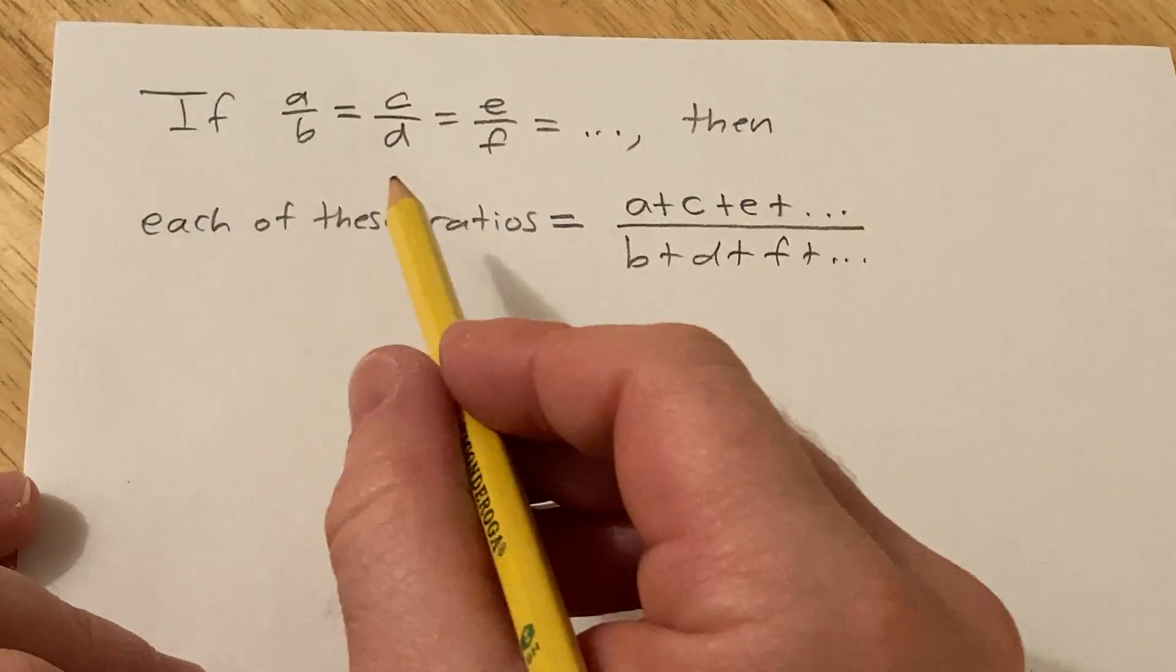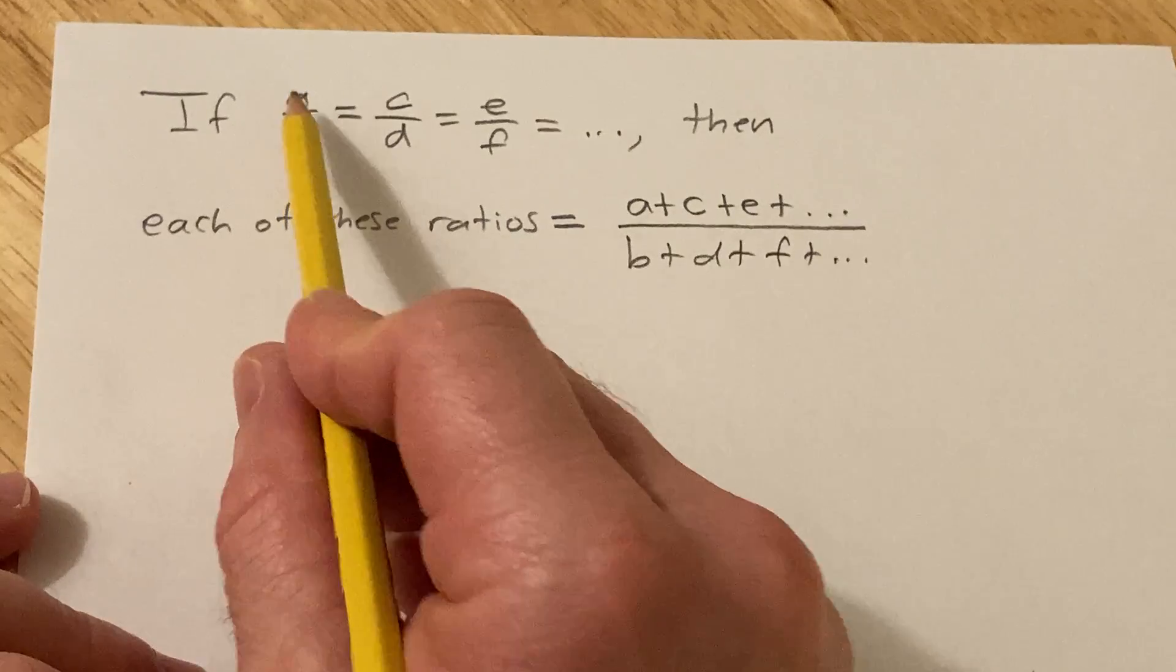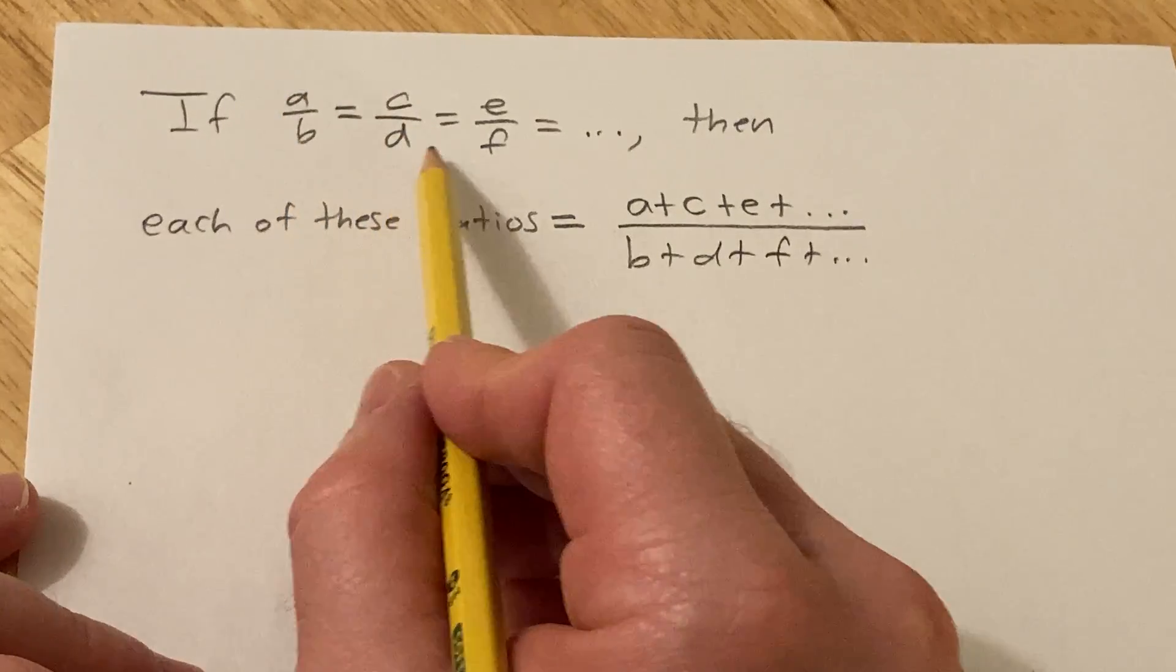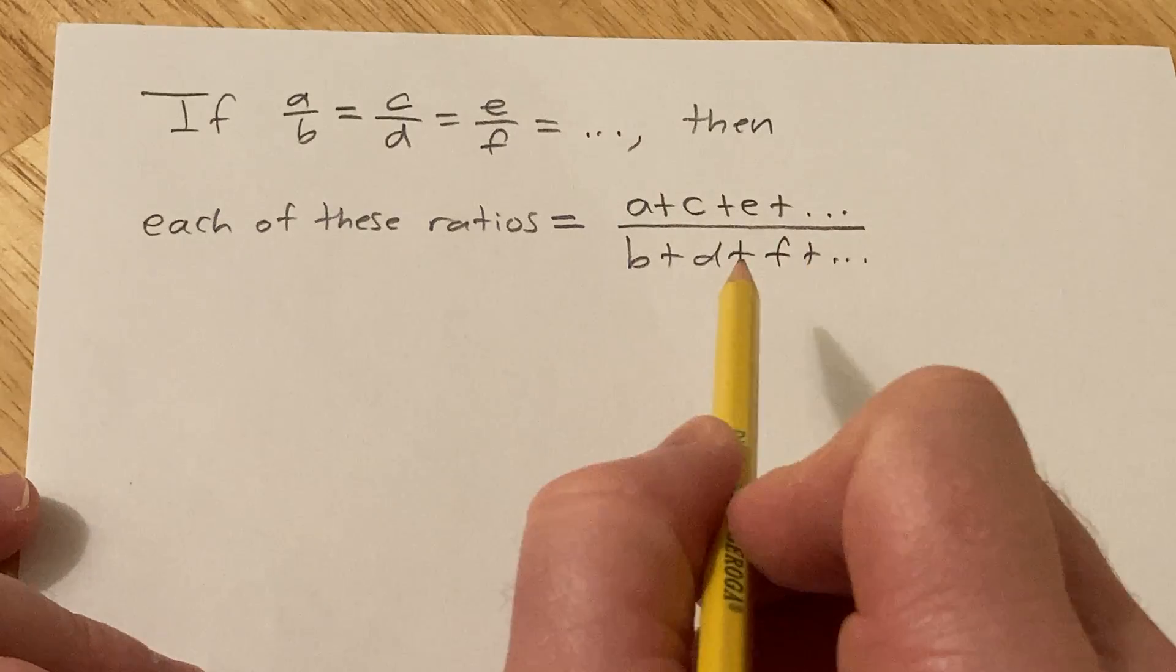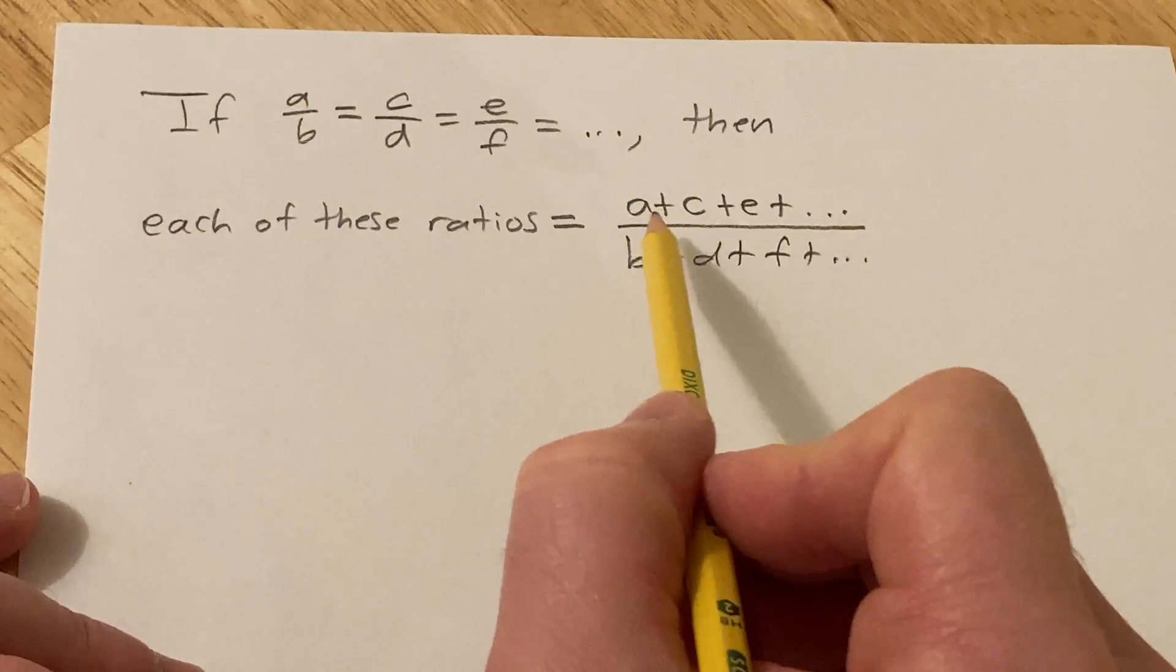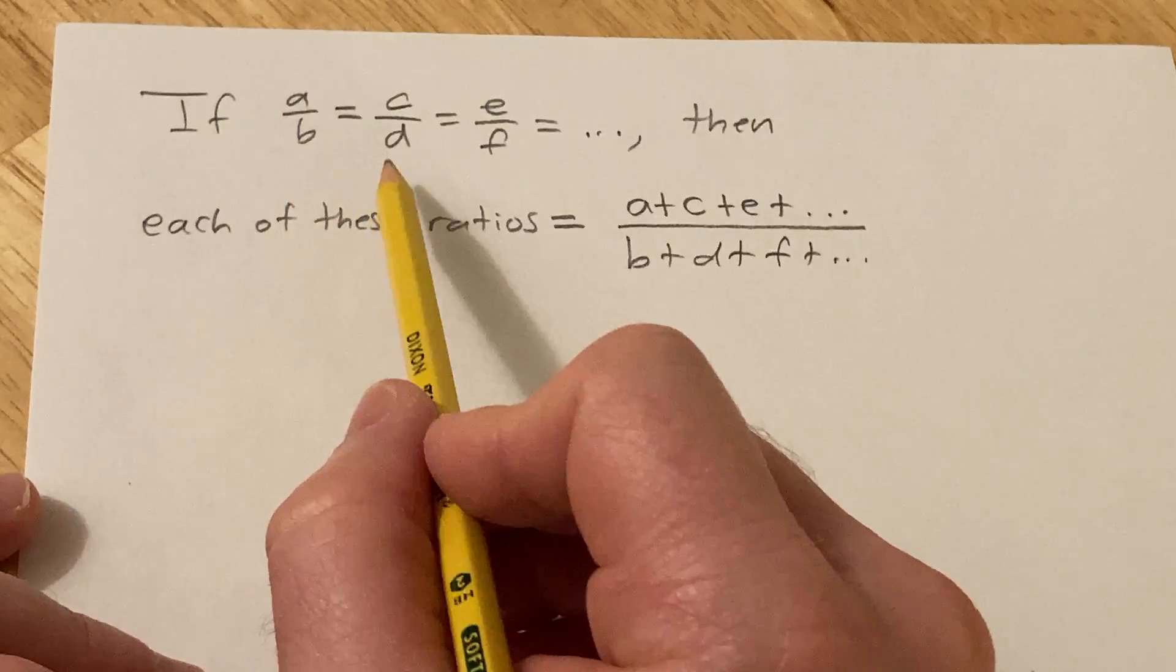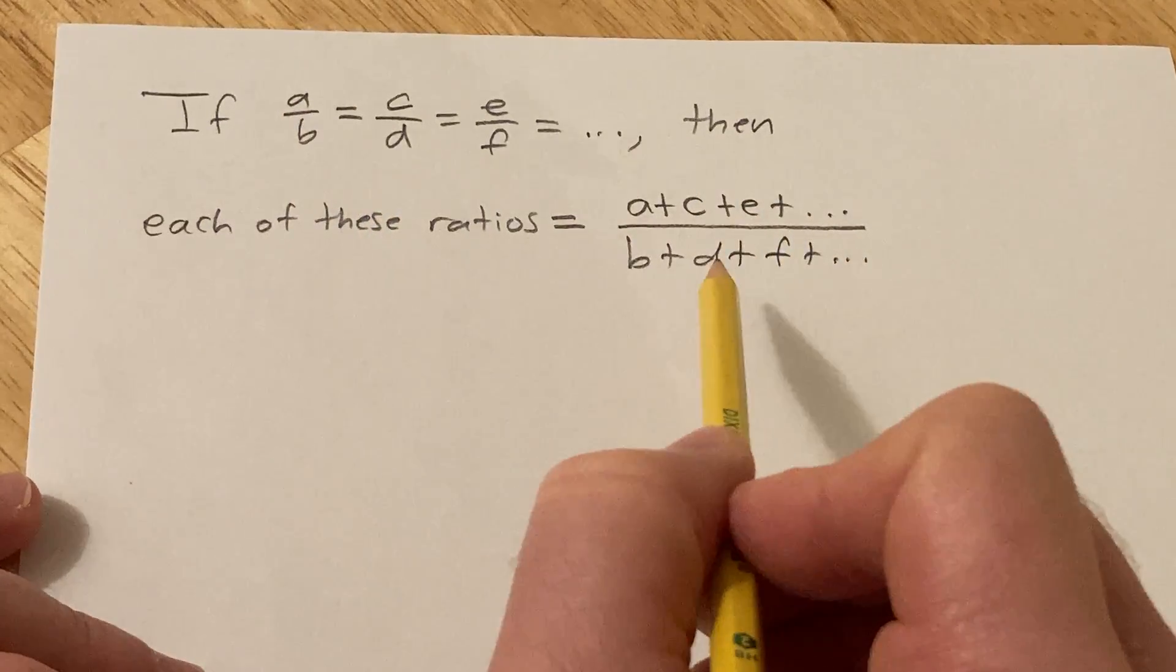Hi, in this video we're going to do a problem. We're told that if all of these ratios are equal, so a over b is equal to c over d which is equal to e over f, etc., then each of these ratios is equal to this. So basically if you have a bunch of fractions and they're equal, then each of these fractions is equal to the sum of the numerators divided by the sum of the denominators.